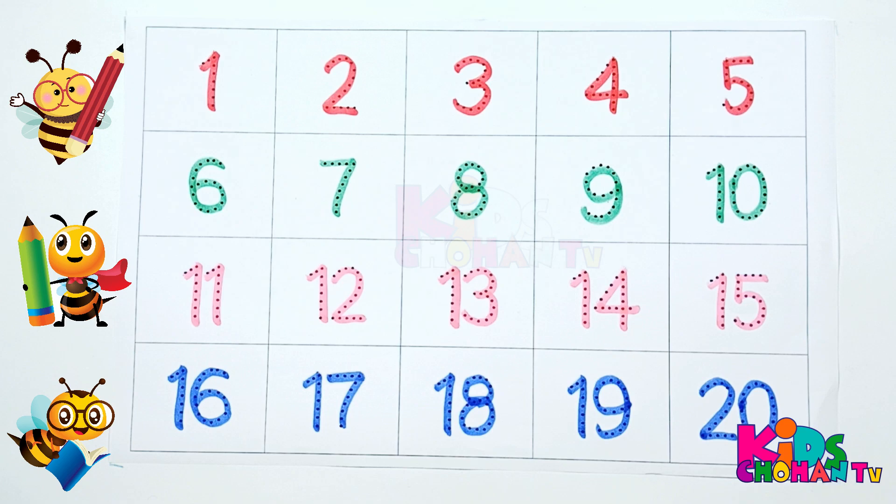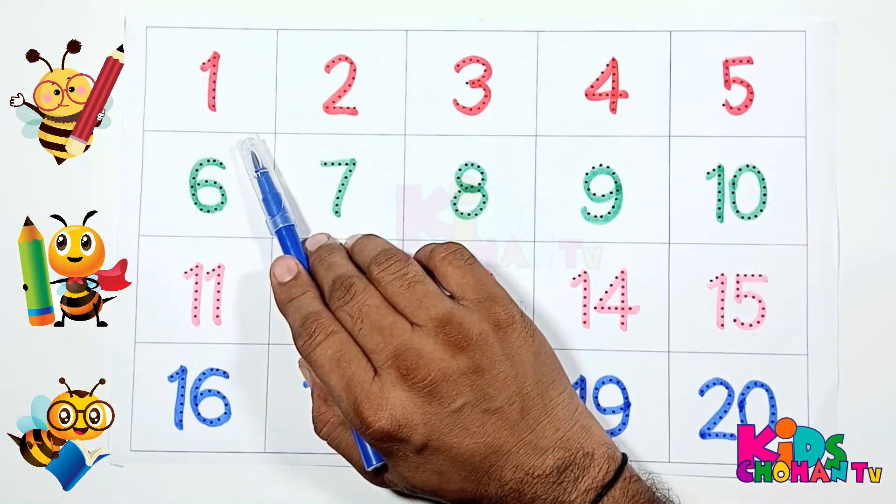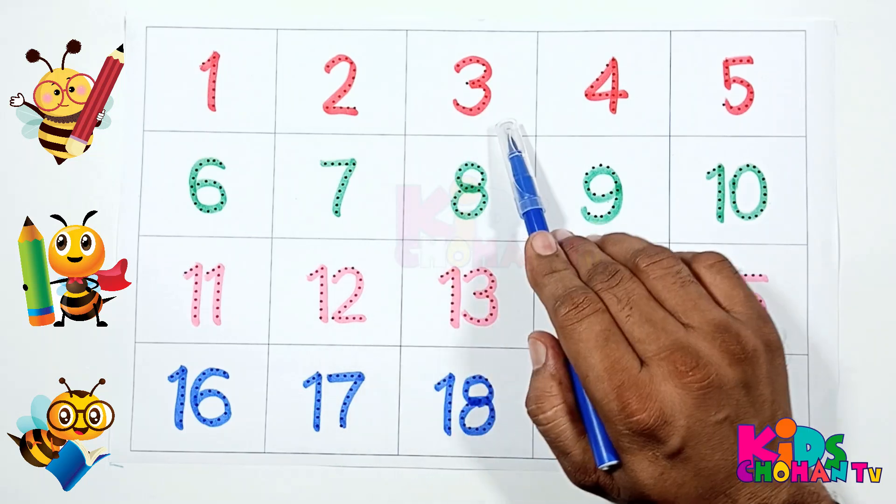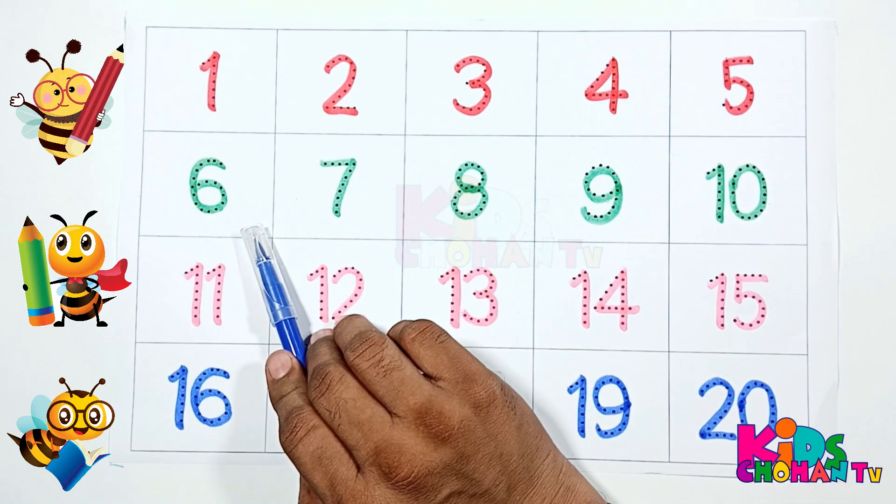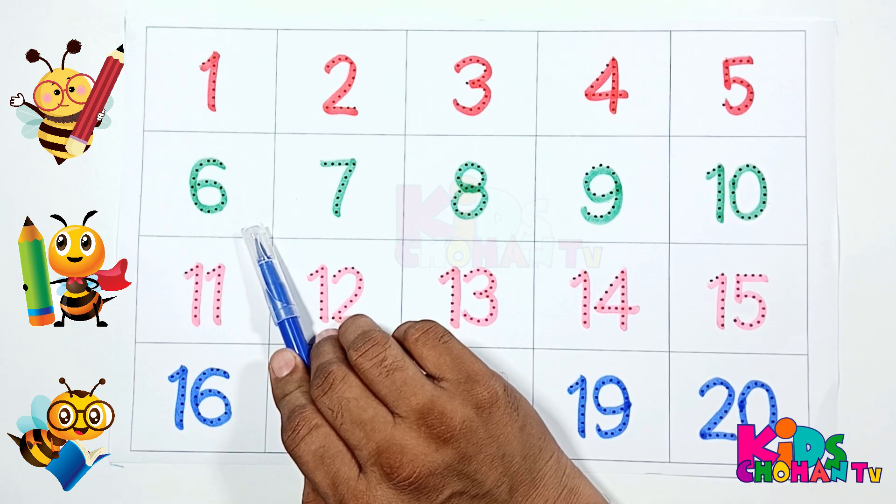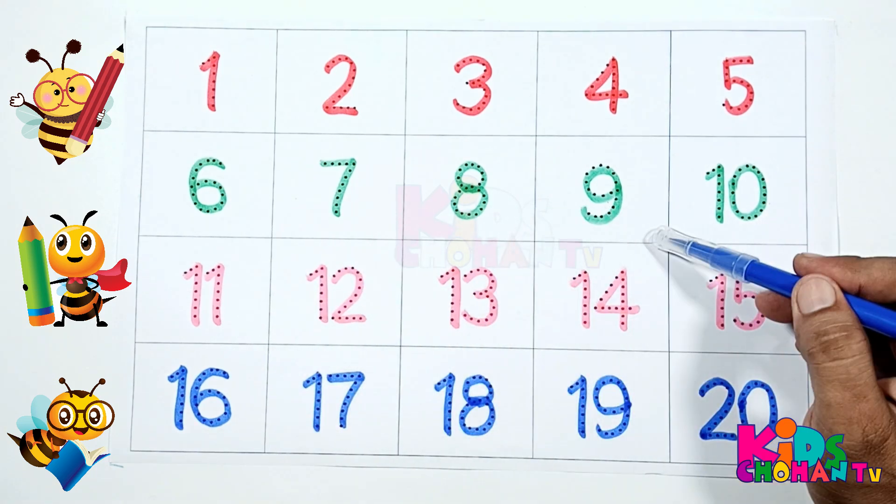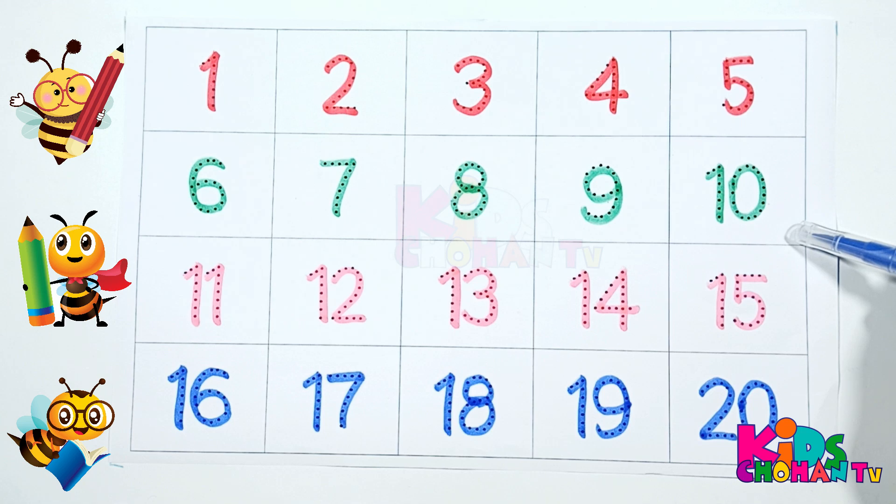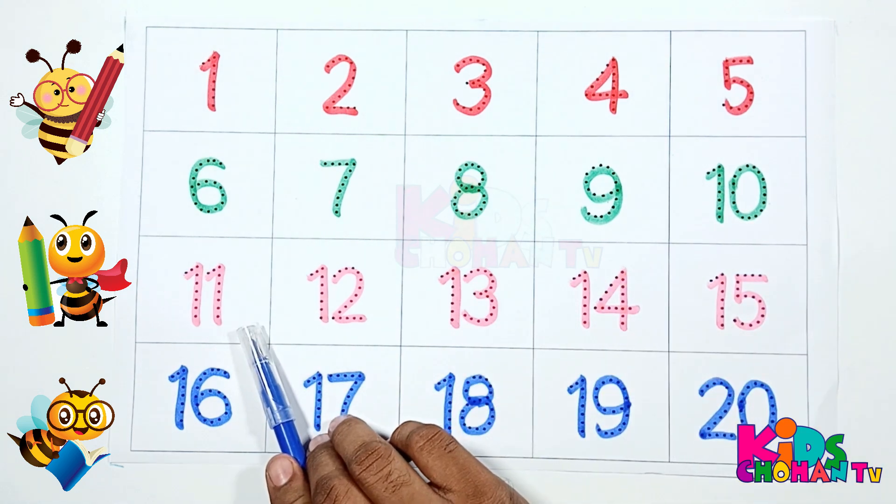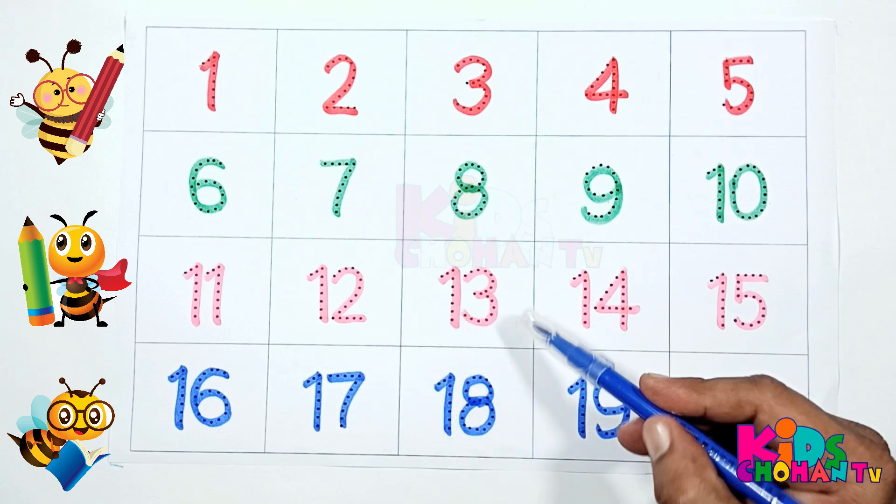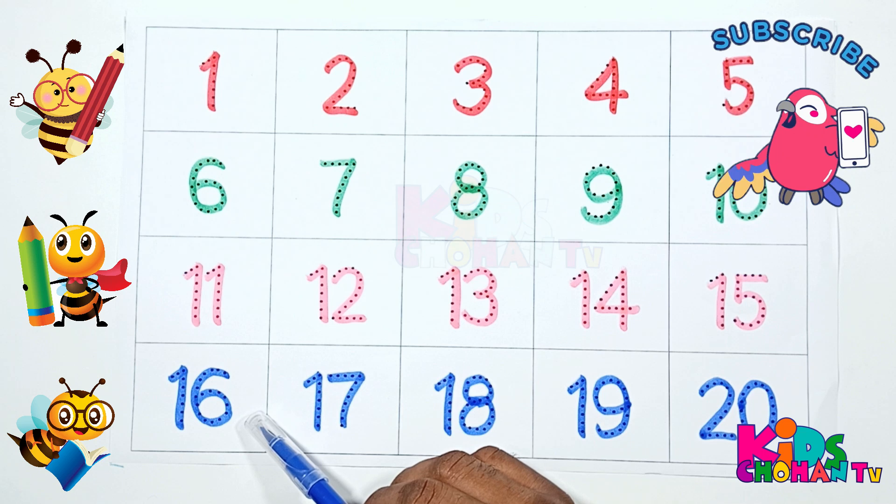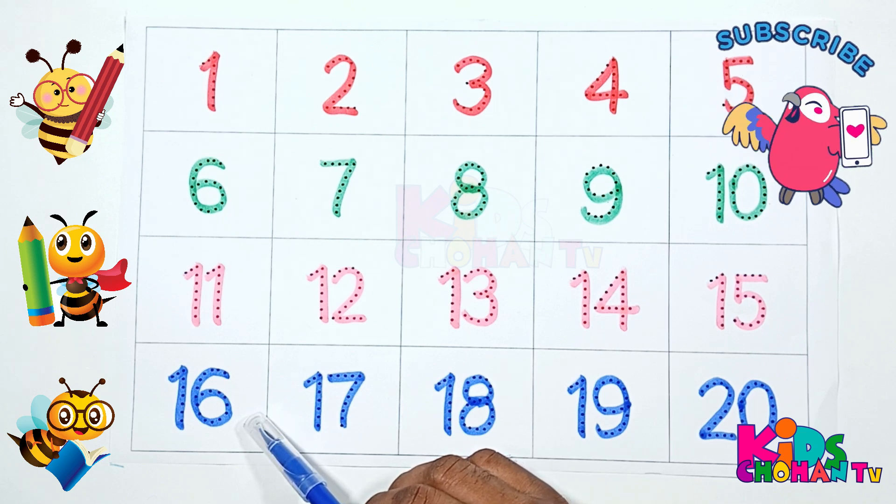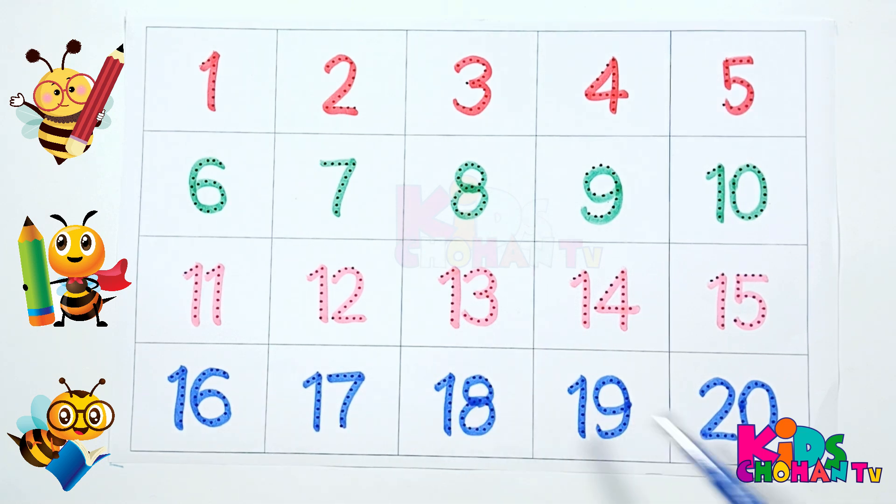Let's read again: 1, 2, 3, 4, 5 - these are from red color. 6, 7, 8, 9, 10 - green color. 11, 12, 13, 14, 15 - pink color. 16, 17, 18, 19, 20 - blue color.